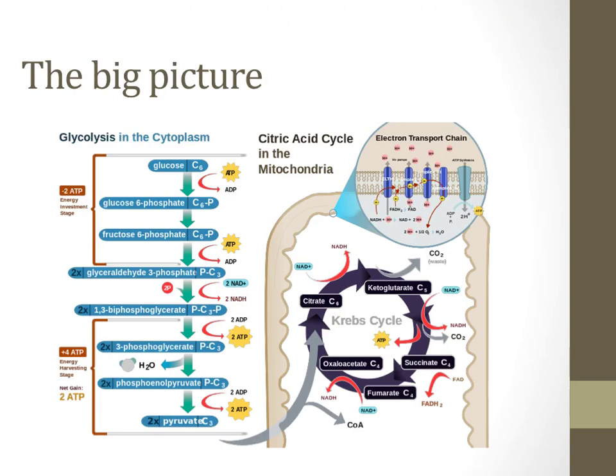Finally, the electron transport chain is the final step where NADH and FADH2 are used to pump protons across the mitochondrial membrane, which can then be used to produce a ton of energy and 34 more ATP molecules.